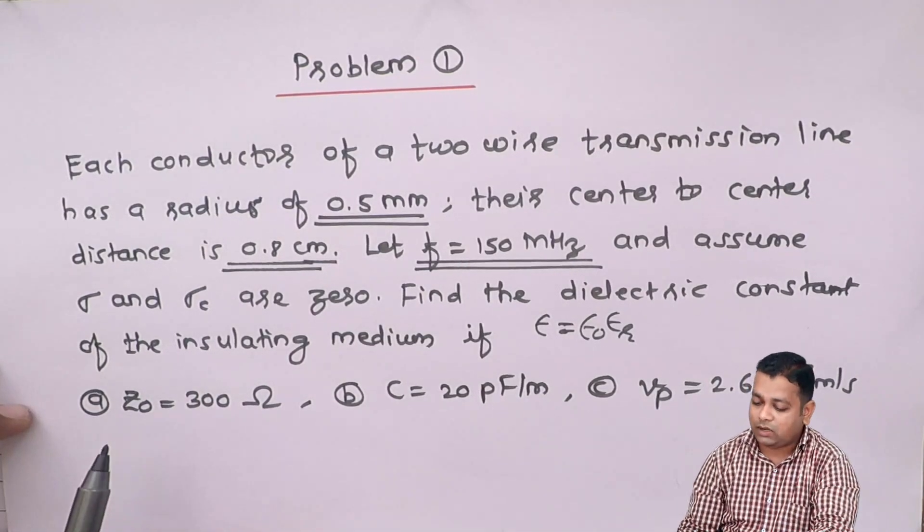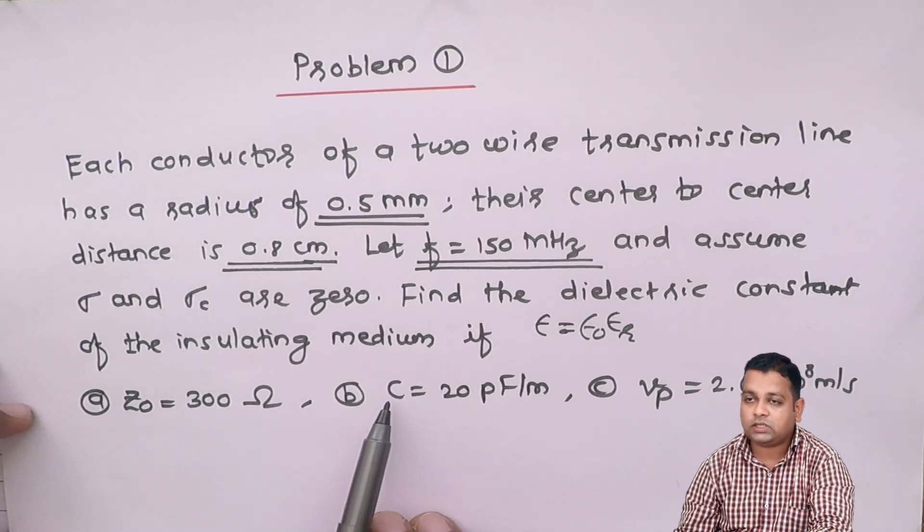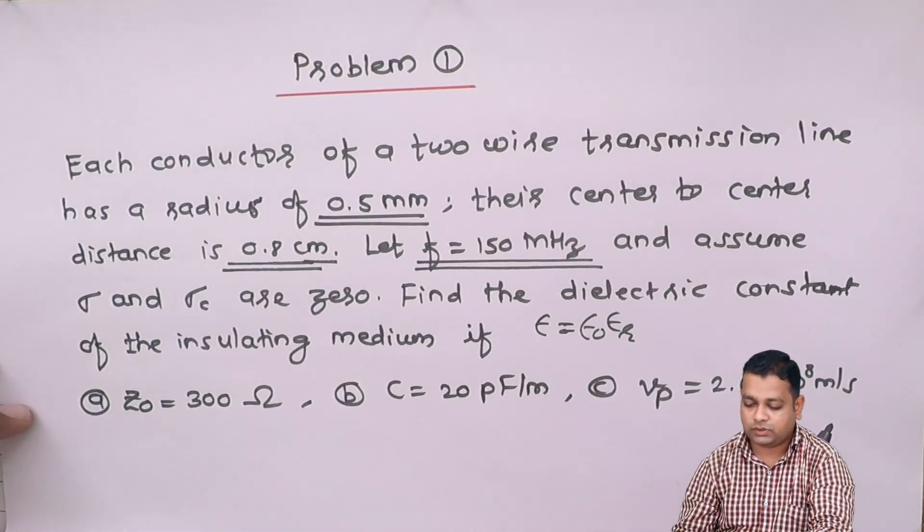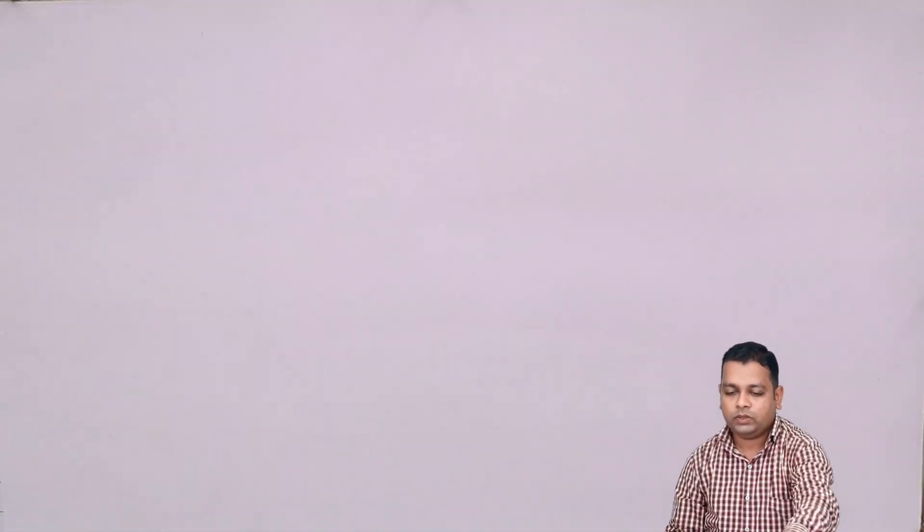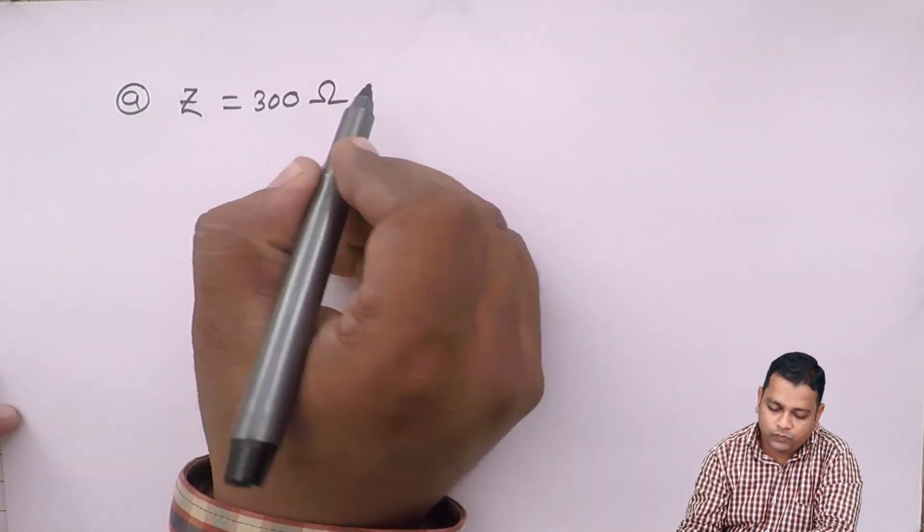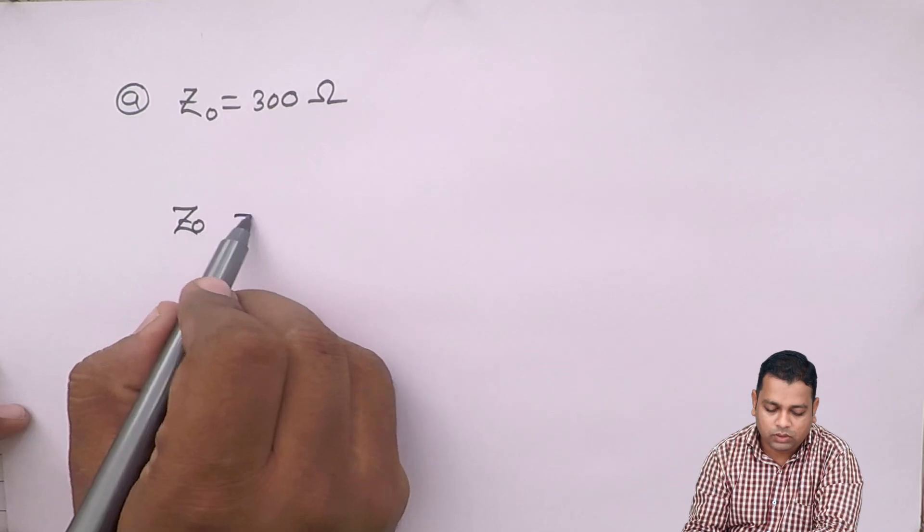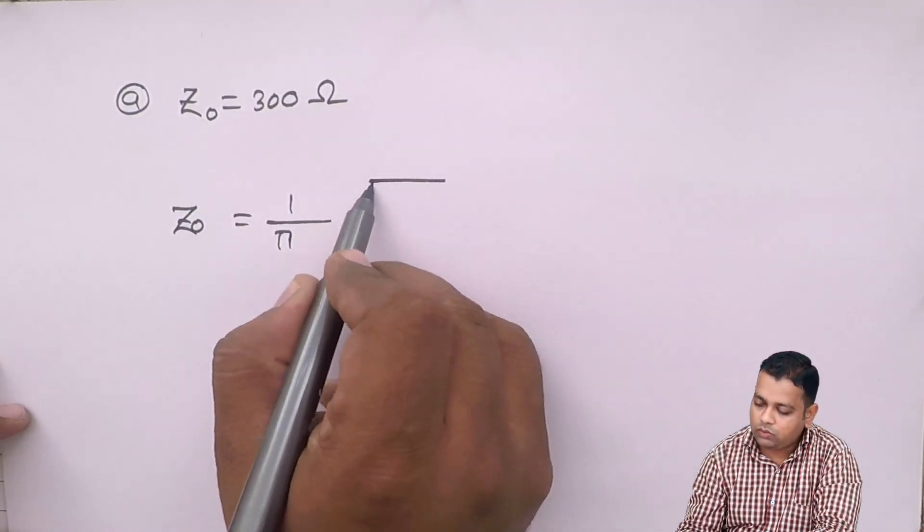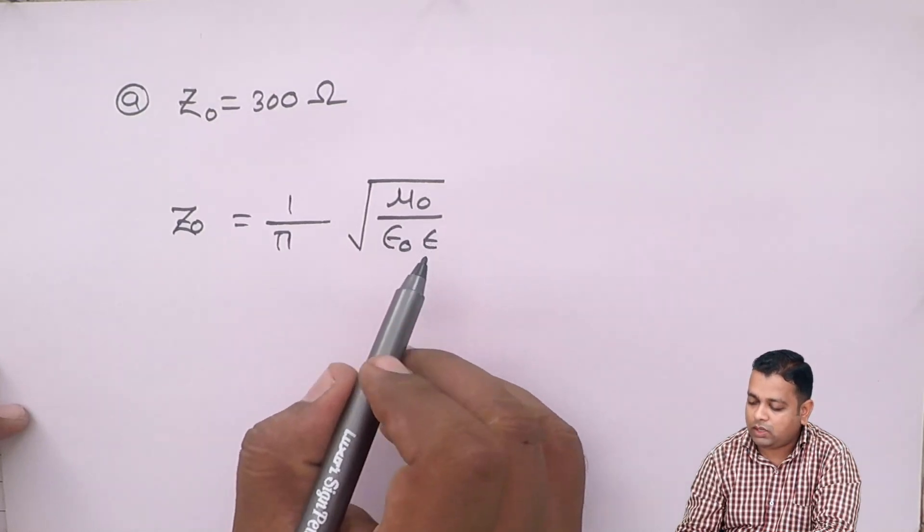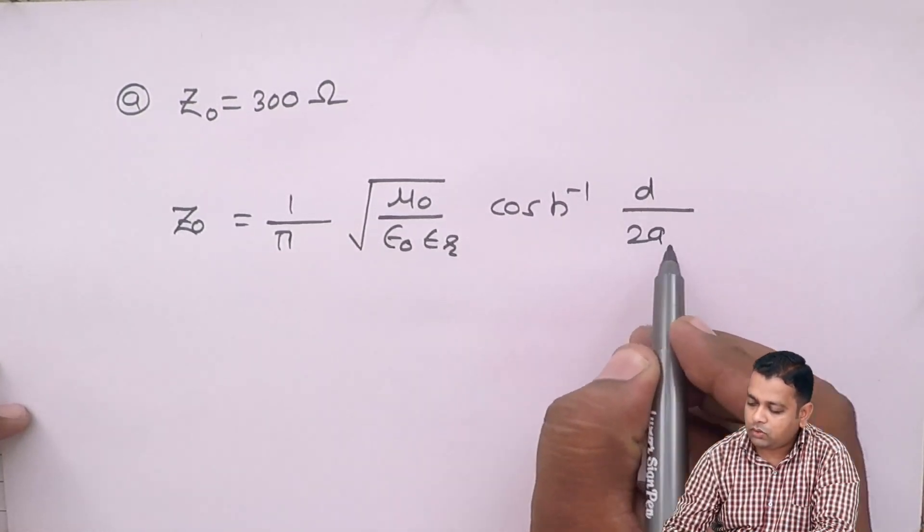First of all, Z0 is given to us, which is the characteristic impedance. In the second case, 20 picofarad per meter is the magnitude of capacitance per unit length of this transmission line. And finally, the phase velocity is 2.6 times 10^8 meter per second. Starting with part a, we know Z0 equals 300 ohm. Therefore, into the formula of Z0, it should be 1 upon pi under root of mu0 divided by epsilon0 times epsilon_r times cosh inverse d divided by 2a.